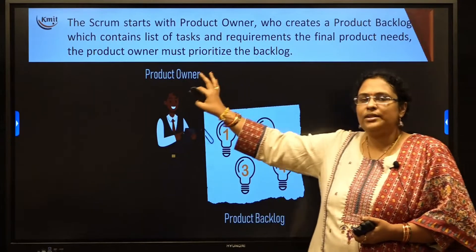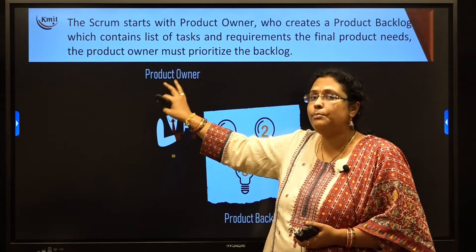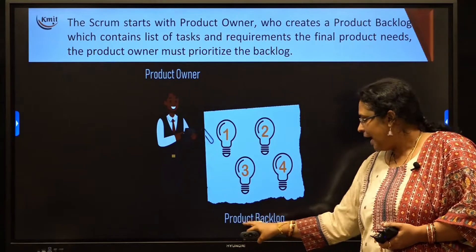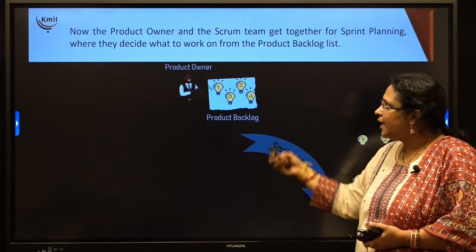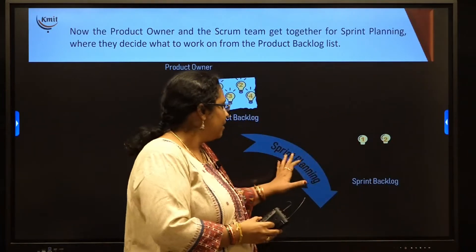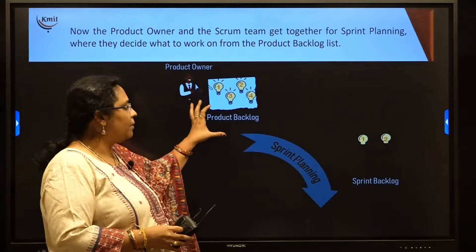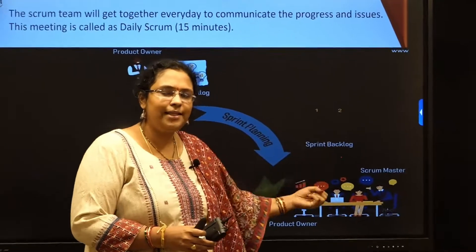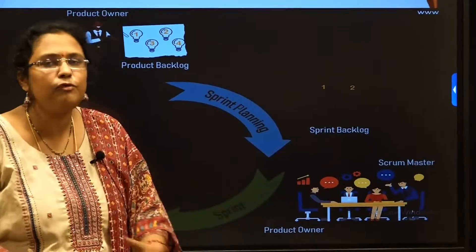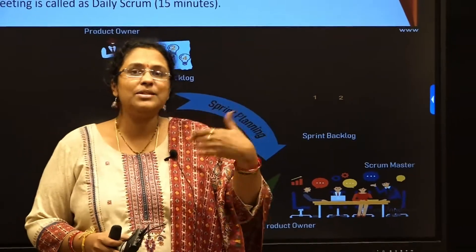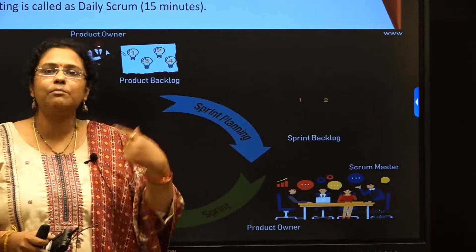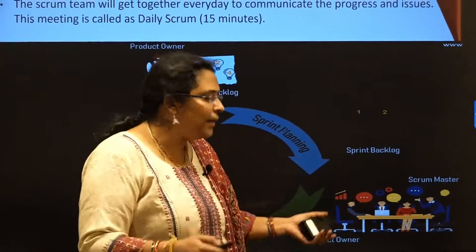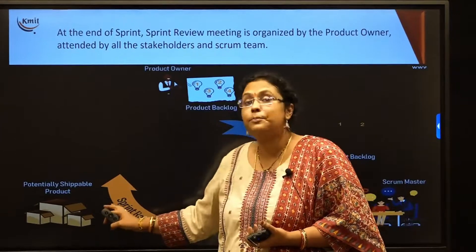Now let us see how Scrum actually works. It is initiated by the Product Owner, who lists all requirements with their priorities and places them in the Product Backlog. Then a few requirements from the Product Backlog are put into the Sprint Backlog. From the Sprint Backlog, the team develops those requirements over the next 14 days. During development, the Scrum Master meets the team daily, takes feedback, collects and solves their problems.